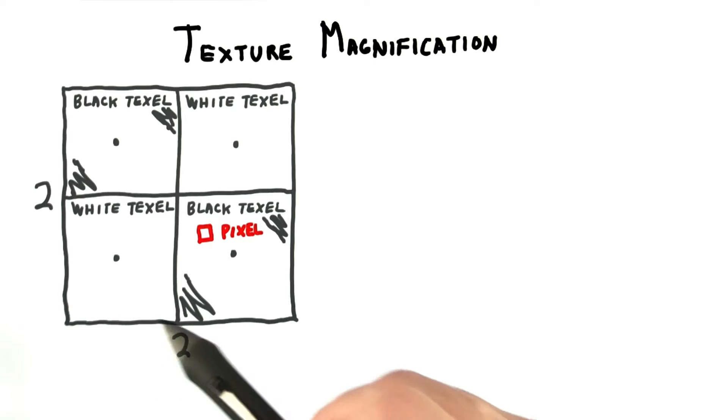Say you have a very simple texture pattern, a checkerboard consisting of just four texels. What happens if you put this texture on a square?